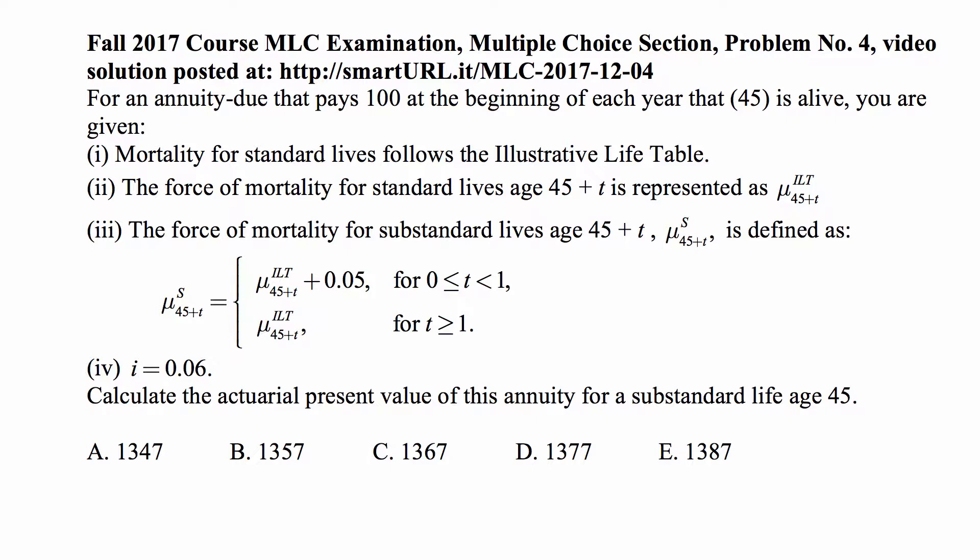The interest rate is 6%, which is the same as in the illustrative life table, so we don't have to worry about reading the entries from the table. We can use them as long as we know that illustrative life table mortality applies. Our job is to calculate the actuarial present value of this annuity for a substandard life age 45.